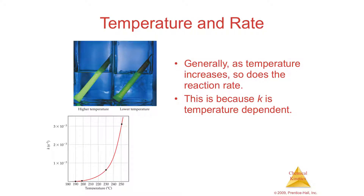Section 14.5: temperature and rate. The hotter something is, the faster the reaction will happen. This is primarily due to the fact that all of the molecules are moving faster. Those molecules then slam into each other more readily, and as they do that, some of them will react. So the more you can get them to bump into each other, the more likely you are to have a reaction. So the higher the temperature, the higher your K is.